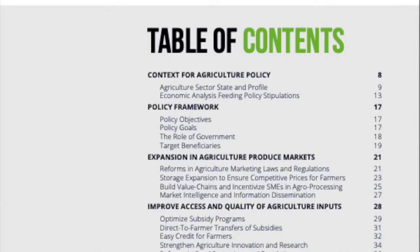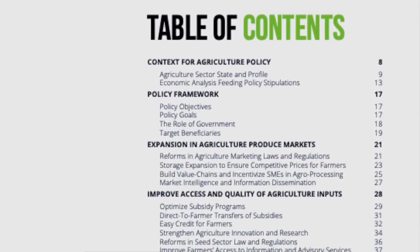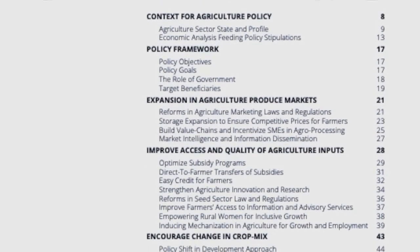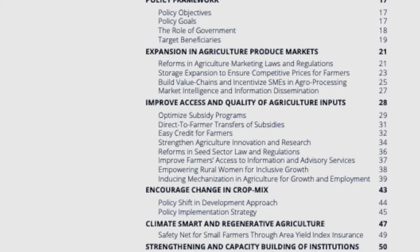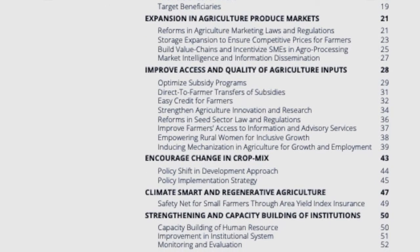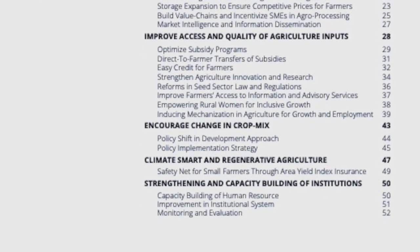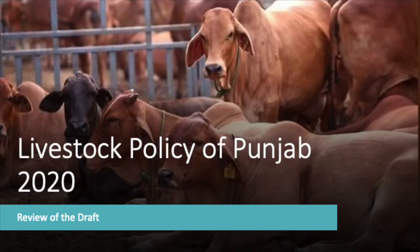If you look at the agriculture policy, there are five or six chapters. The first chapter covers all the policy-related discussion, while the rest of the document — all the other chapters under different thematic areas — discuss the strategies: the real actionable things that a person involved in the implementation of the policy can take from the document and put into practice. The agriculture policy is available in the public domain, while the livestock policy is not available in the public domain so far.